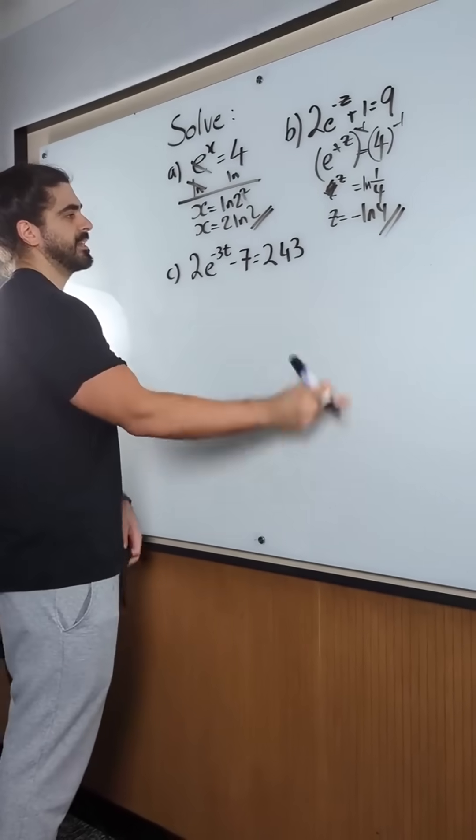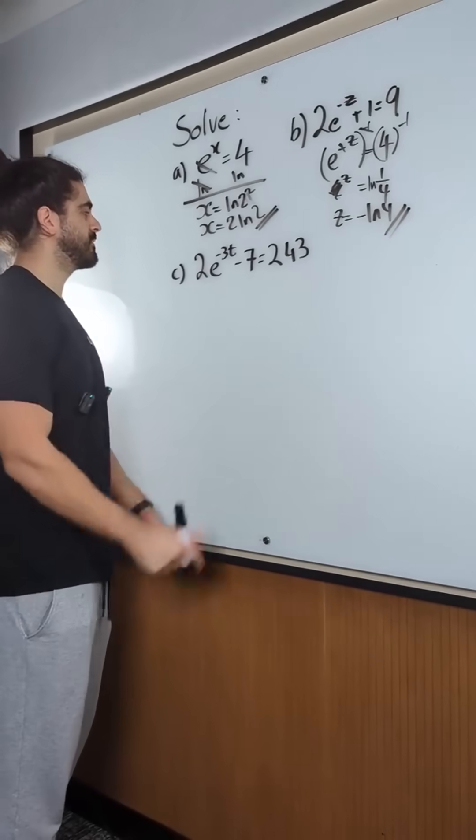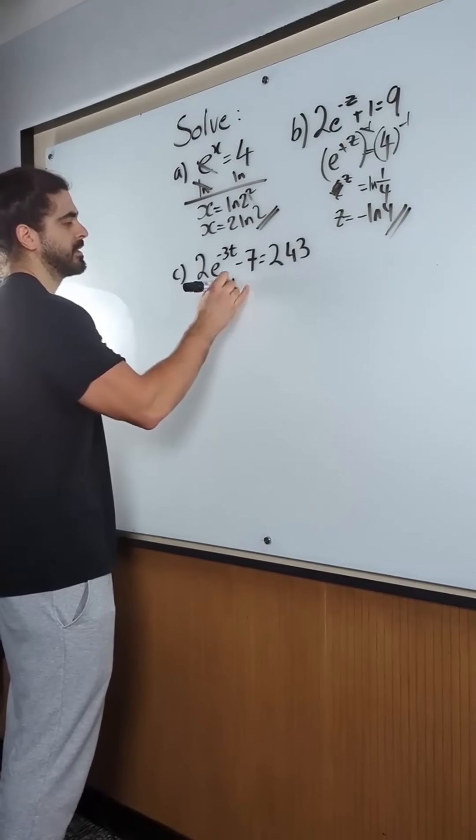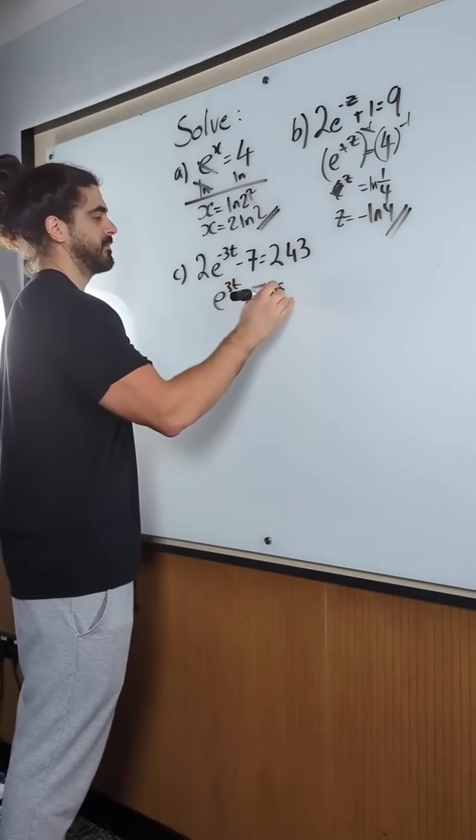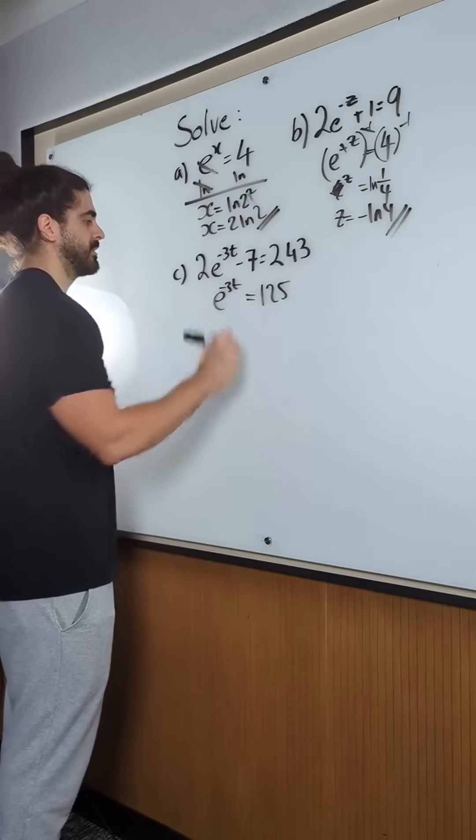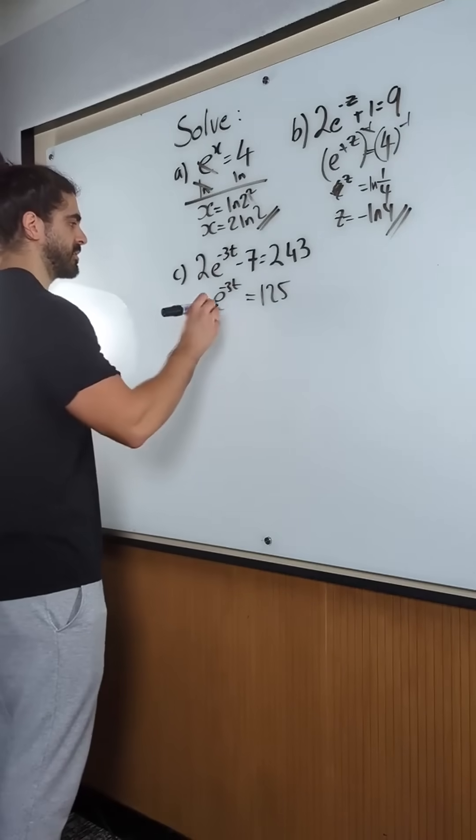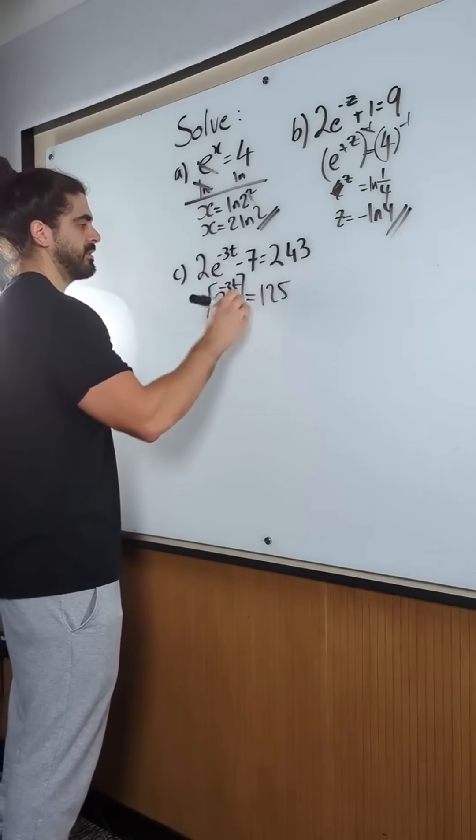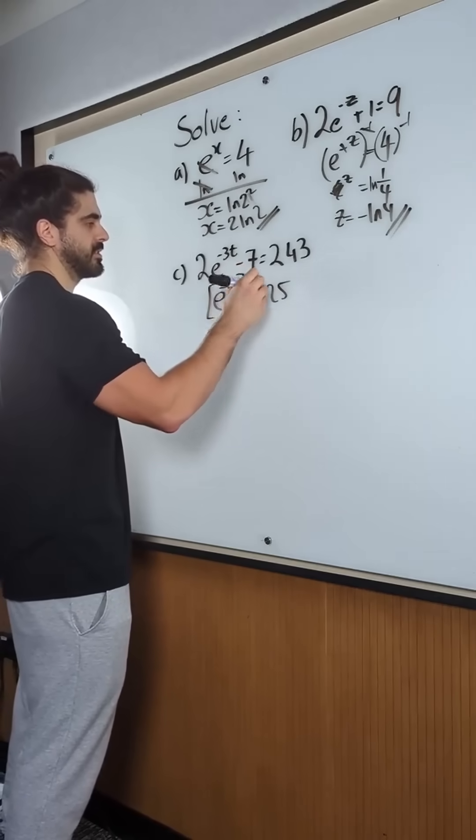This one, add 7, which is 250 divided by 2 is 125. That's minus. I'm doing the same thing, right? So to get rid of this minus 3, I'm going to do power minus one-third on both sides.